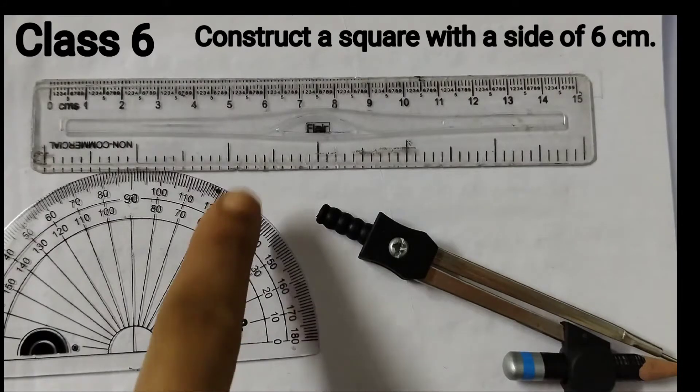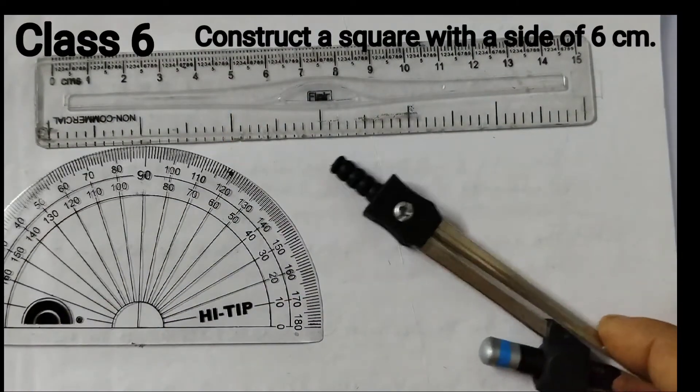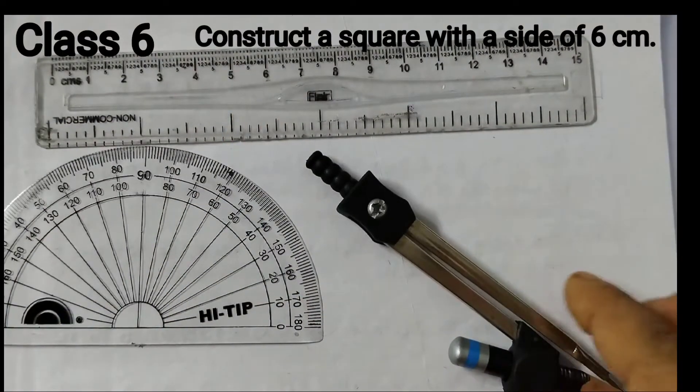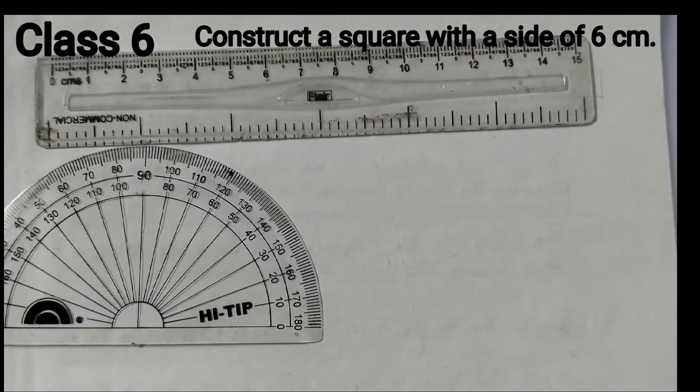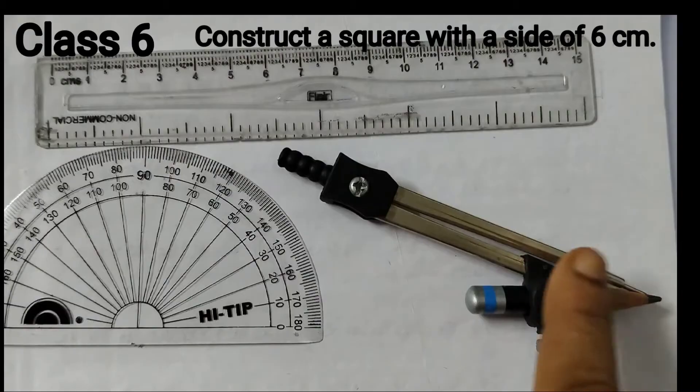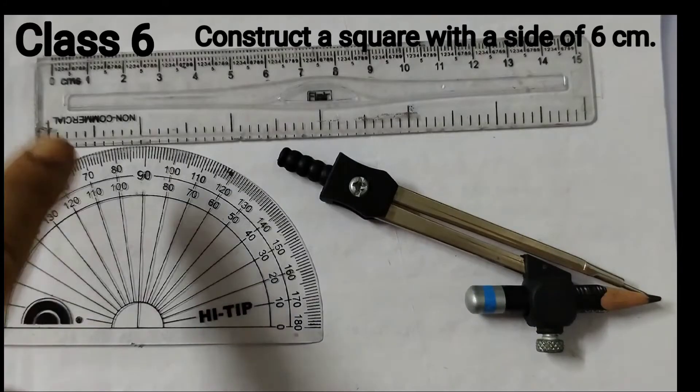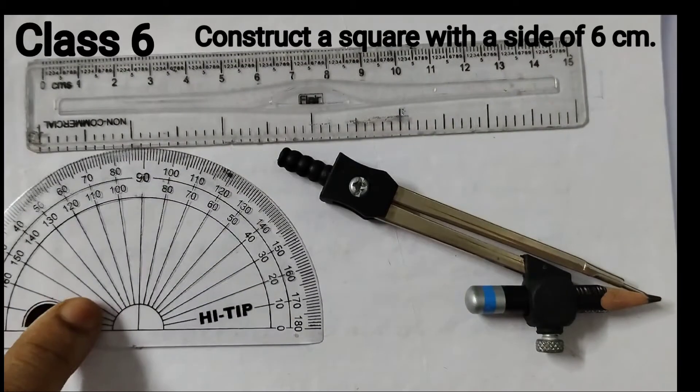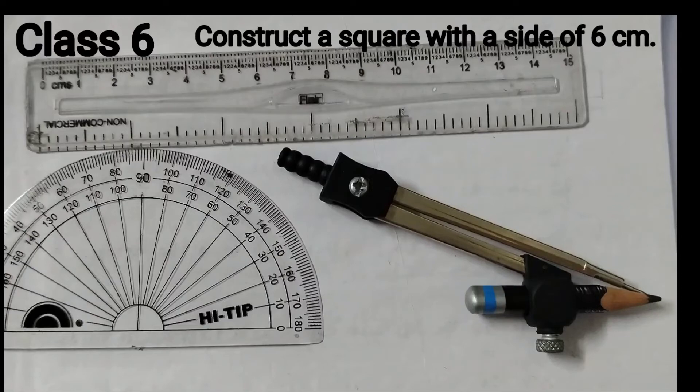For that you need a ruler, a protractor and a compass. This is optional. Even if you don't have the compass you can still construct the square, but I will show you how to use the compass to draw the square. So a ruler and a protractor are a must. Okay, let's get started.